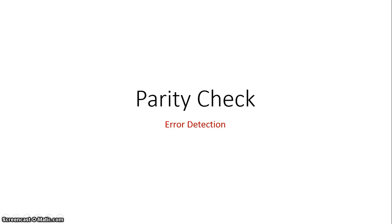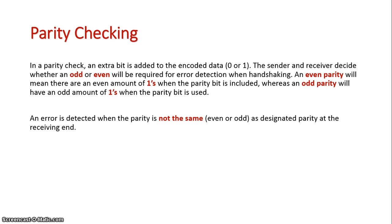The following explains how a parity check is conducted when transmitting data over a network. Basically, the purpose is to add an extra bit to the end of each packet. This bit is used to make either an odd or even parity.